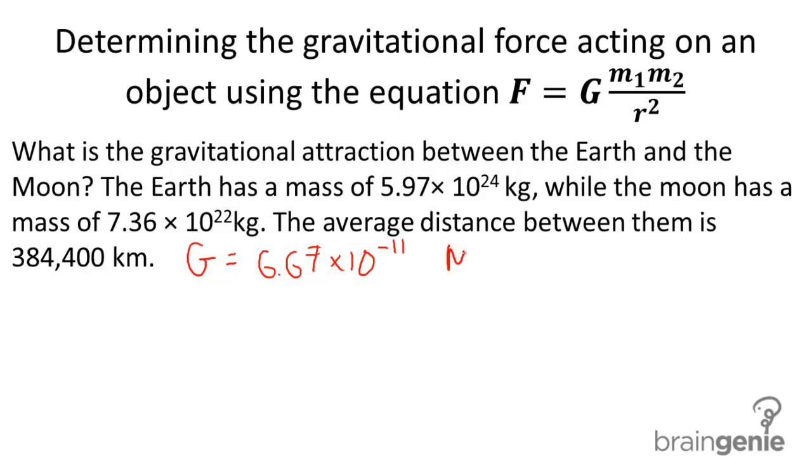I'm going to write the mass of the Earth. I'm just going to call that M1, and that's 5.97 times 10 to the 24. And then you have M2, which we'll call the mass of the Moon, and that's 7.36 times 10 to the 22. These are both in kilograms, which are good. We don't need to change those units.